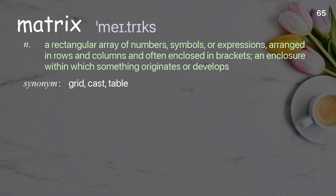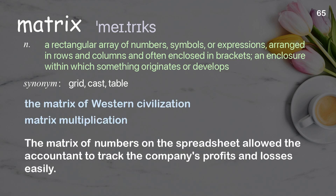Matrix: a rectangular array of numbers, symbols, or expressions arranged in rows and columns and often enclosed in brackets; an enclosure within which something originates or develops. Examples: the matrix of Western civilization. The matrix of numbers on the spreadsheet allowed the accountant to track the company's profits and losses easily.